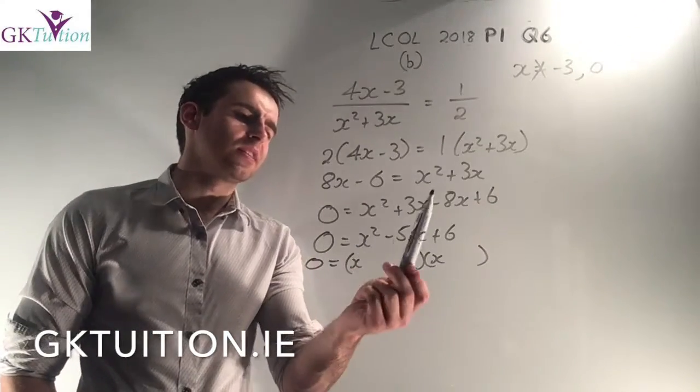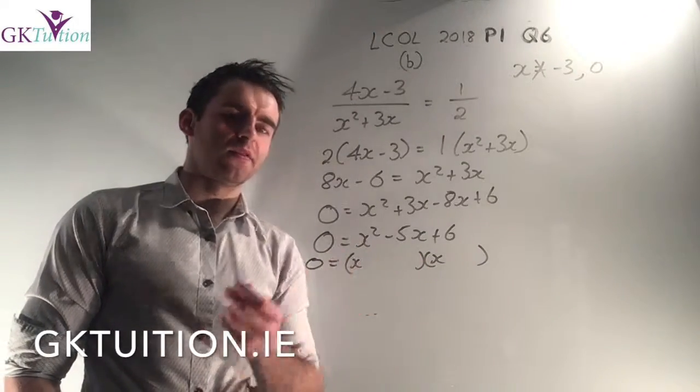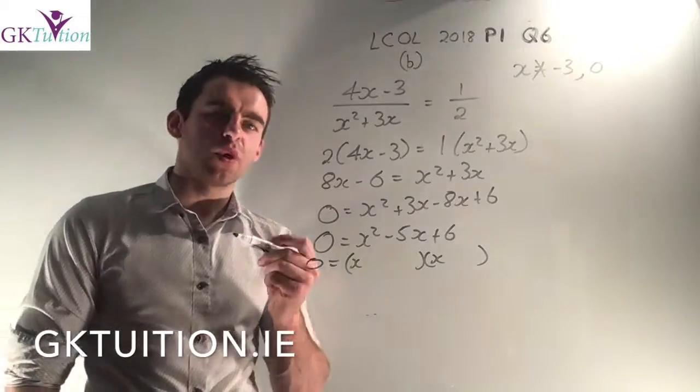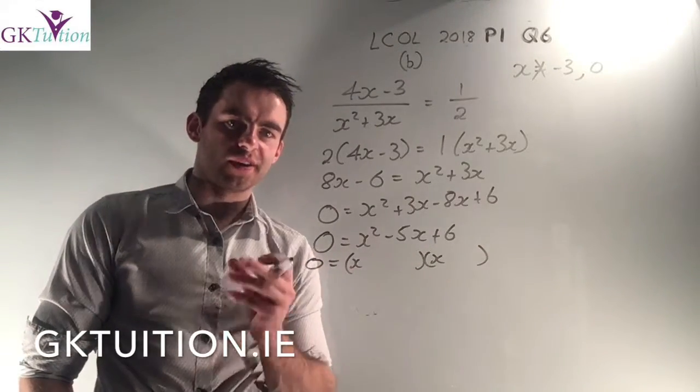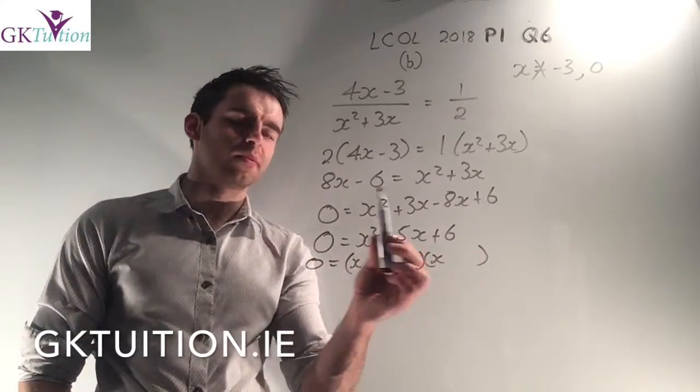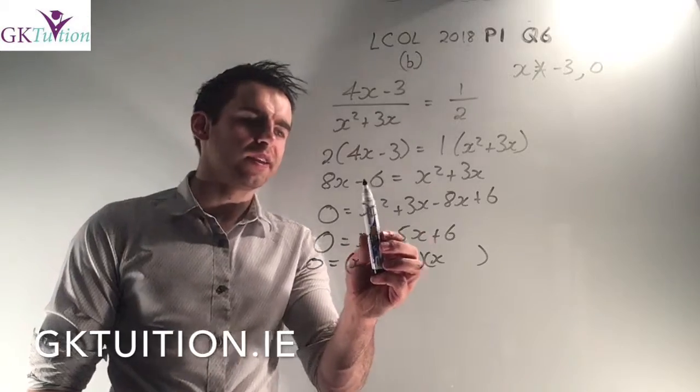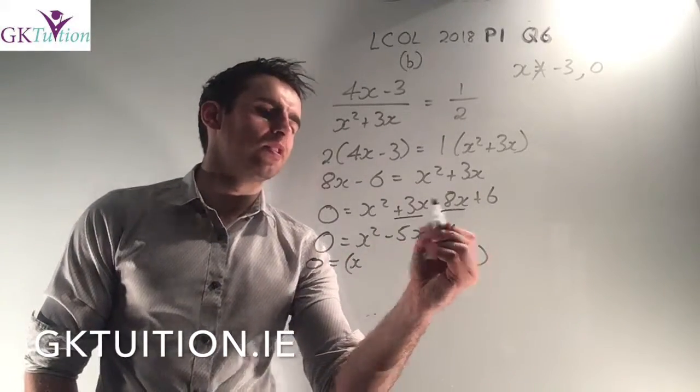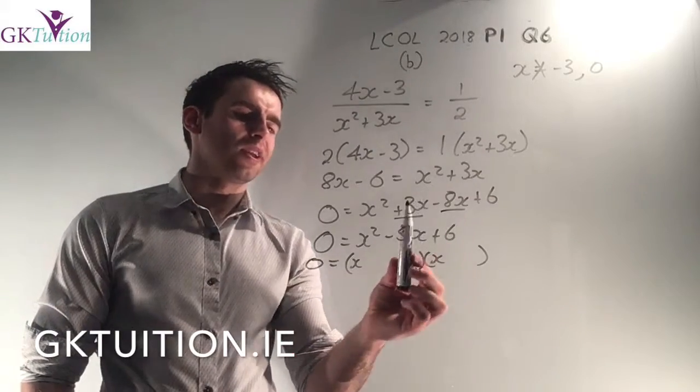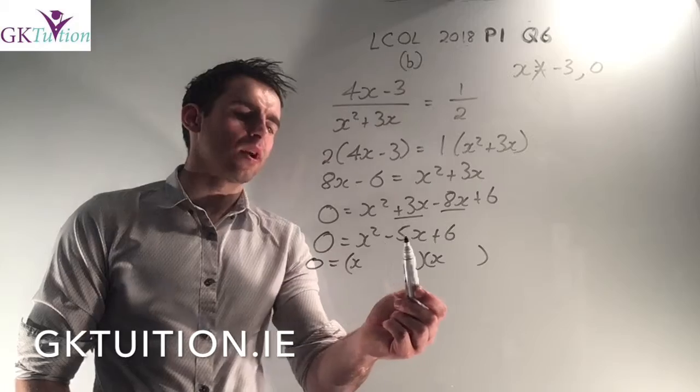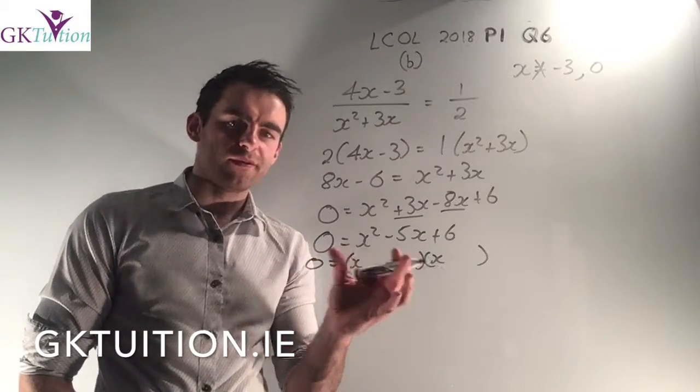Now, you should realize that on this line you have an x², you have x's and you have numbers, which means you must have a quadratic equation. If you have a quadratic equation, you should bring everything to one side so you can factorize it. So I brought the +8x comes across becomes -8x. The -6 comes across becomes +6. And if I then group the two like terms, 3x - 8x is -5x. So I get to this stage where I have x² - 5x + 6 = 0.